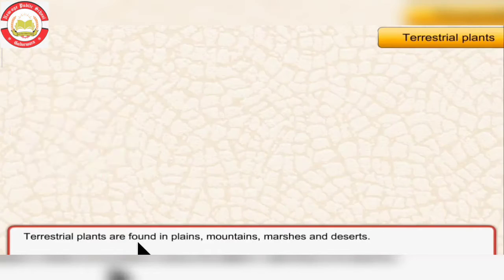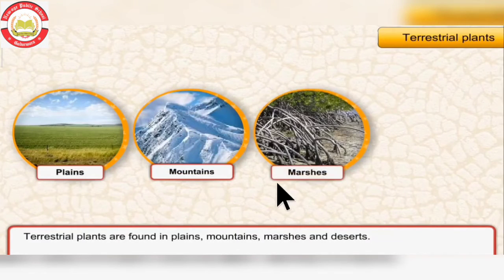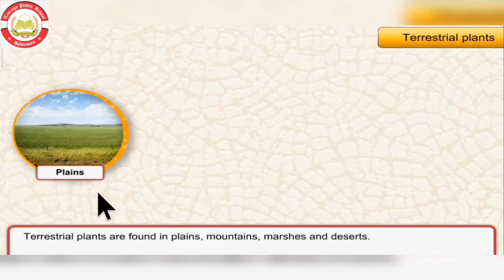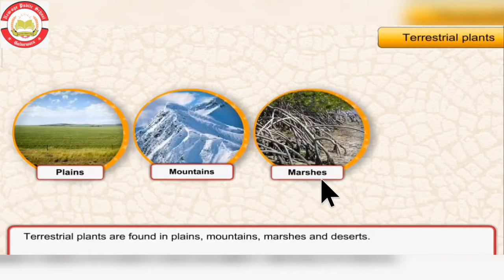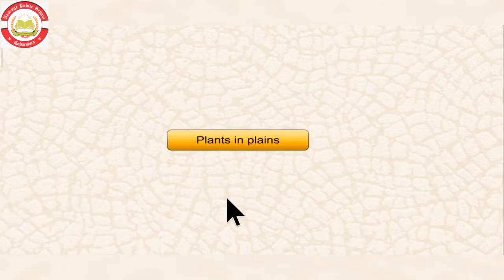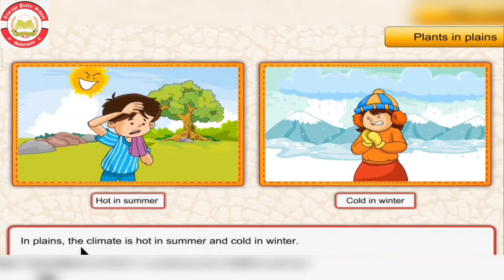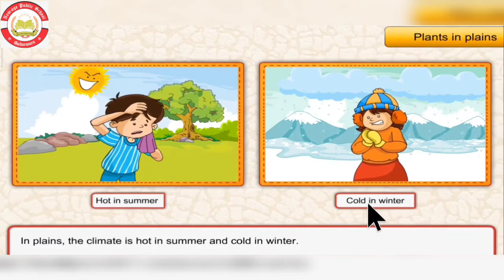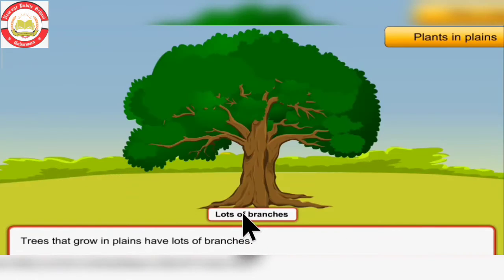Terrestrial plants are found in plains, mountains, marshes, and deserts. Plants in plains — in plains, the climate is hot in summer and cold in winter. Trees that grow in plains have lots of branches and can tolerate the summer heat.